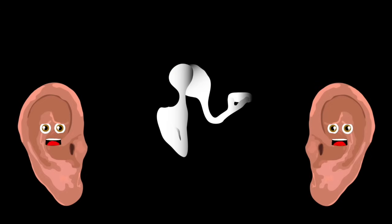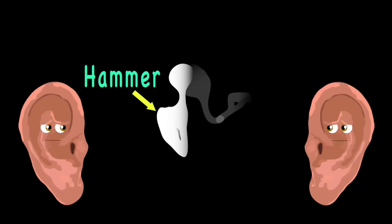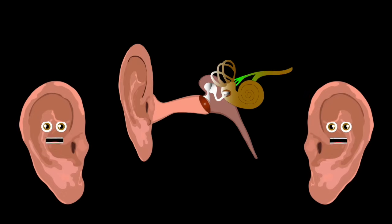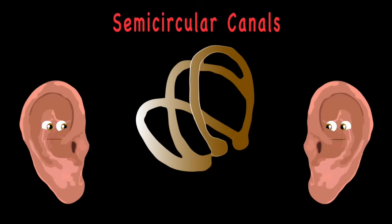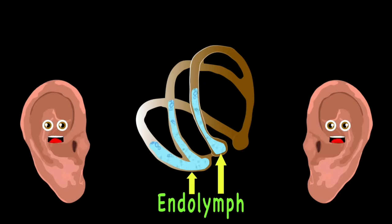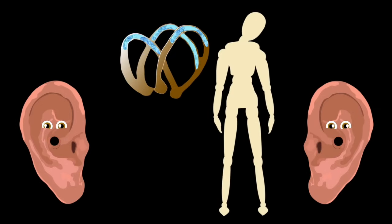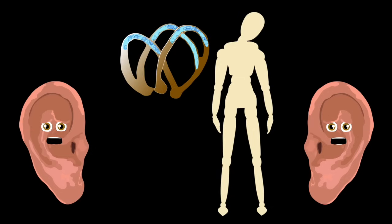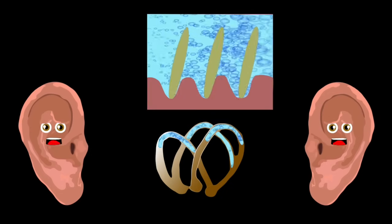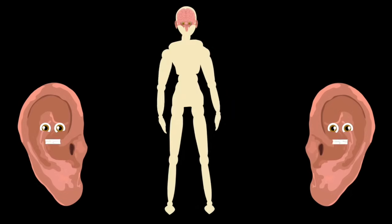The smallest bones in your body are from the ossicles group — they are the hammer, anvil, and stirrup. The semicircular canals are made up of three tubes filled with liquid endolymph. They look just like little loops. When your head is in motion, the liquid endolymph moves, triggering the little hairs called cilia. The cilia sends these motion signals to your brain, then your brain knows how to balance you.